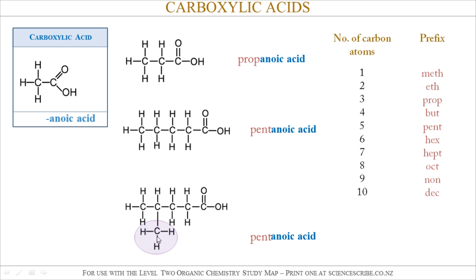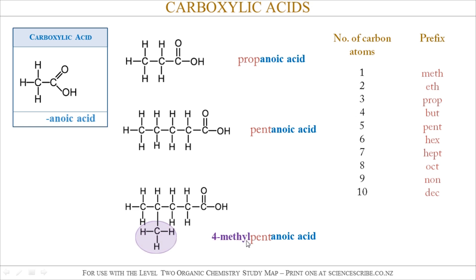In this last example, I have a methyl group hanging off — it's a side group. I know it's called a methyl group because it's only one carbon atom long, and one carbon atom corresponds to 'meth' in the table. At the end of 'meth' I add the letters 'yl' to show that it's a side group.